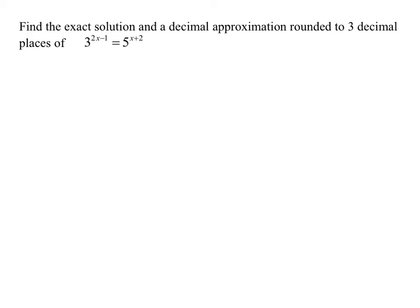So I'm going to have to solve this equation by taking natural logarithms of both sides, because if two quantities are equal, then their natural logarithms are equal. So the natural log of three raised to the two X minus one has to equal the natural log of five raised to the X plus two. I could also have solved this by taking the common log, or log base 10, of both sides and still got the same answer.